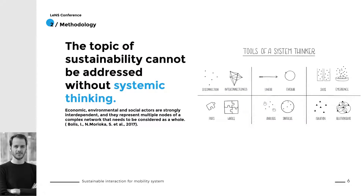We designed all of that through a methodology that heavily involves a systemic approach. Systemic design should address systemic thinking. On the right we can see some of the most significant shifts provided by this approach — for example, from linear to circular, from analysis to synthesis, from parts to considering the whole system, and so on.